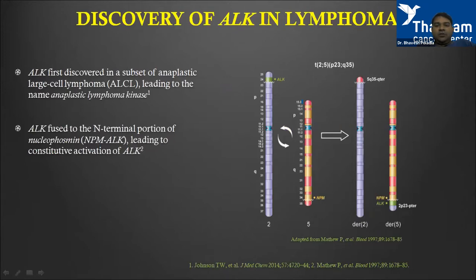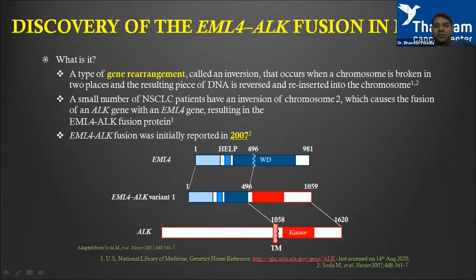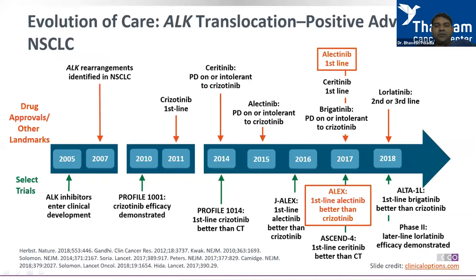ALK is not only present in lymphoma but is seen in many other tumors. For lung cancer, almost three to seven percent of patients have EML4-ALK fusion mutation. The discovery in lung happened about 15 years ago in 2007. Essentially it is a gene rearrangement where there is a fusion of EML4 to ALK, which causes activation of protein synthesis.